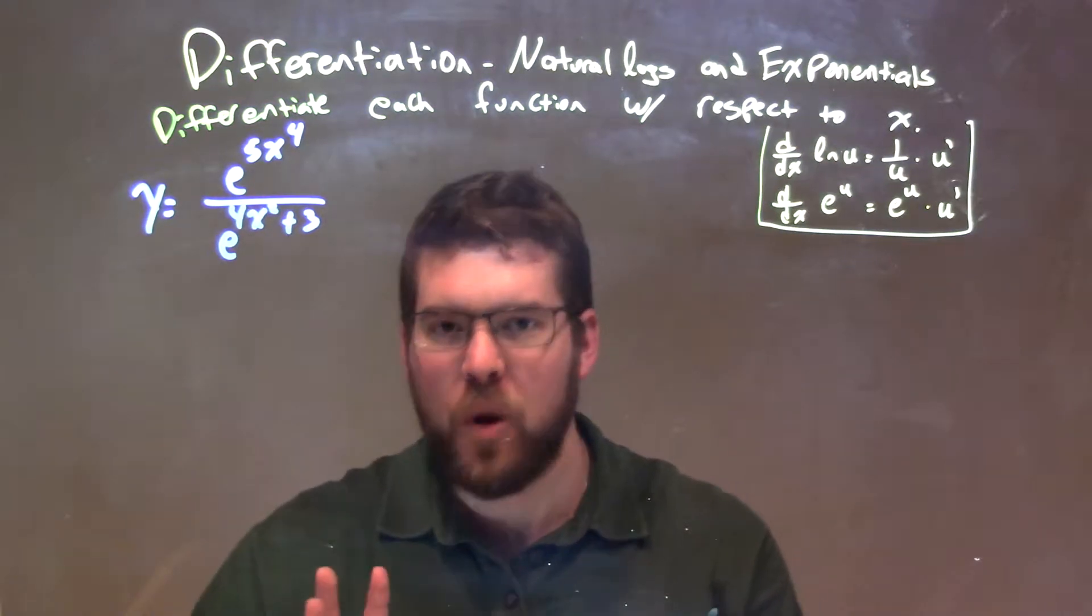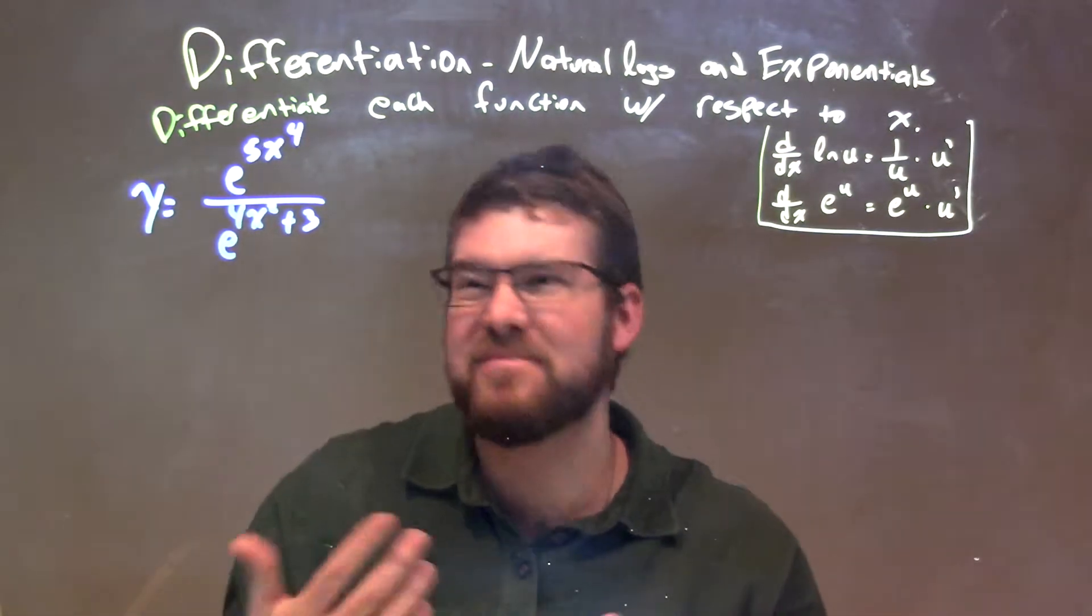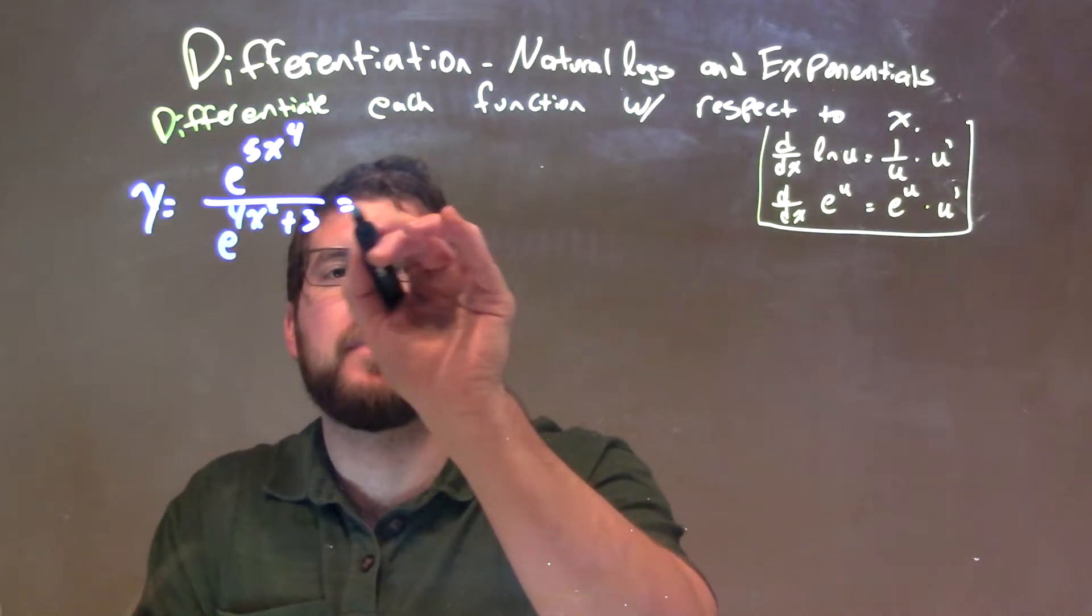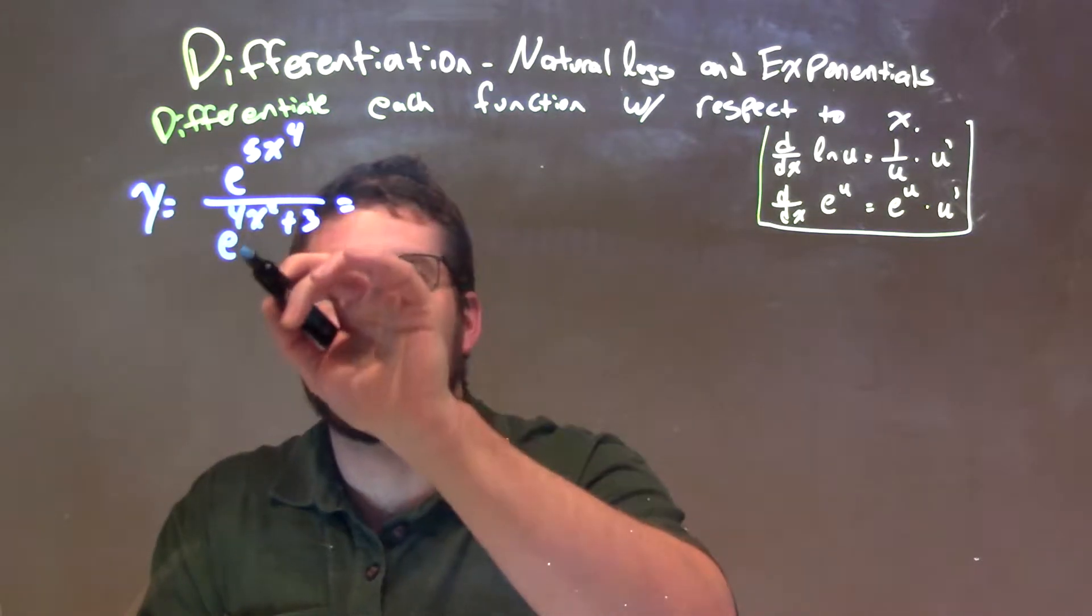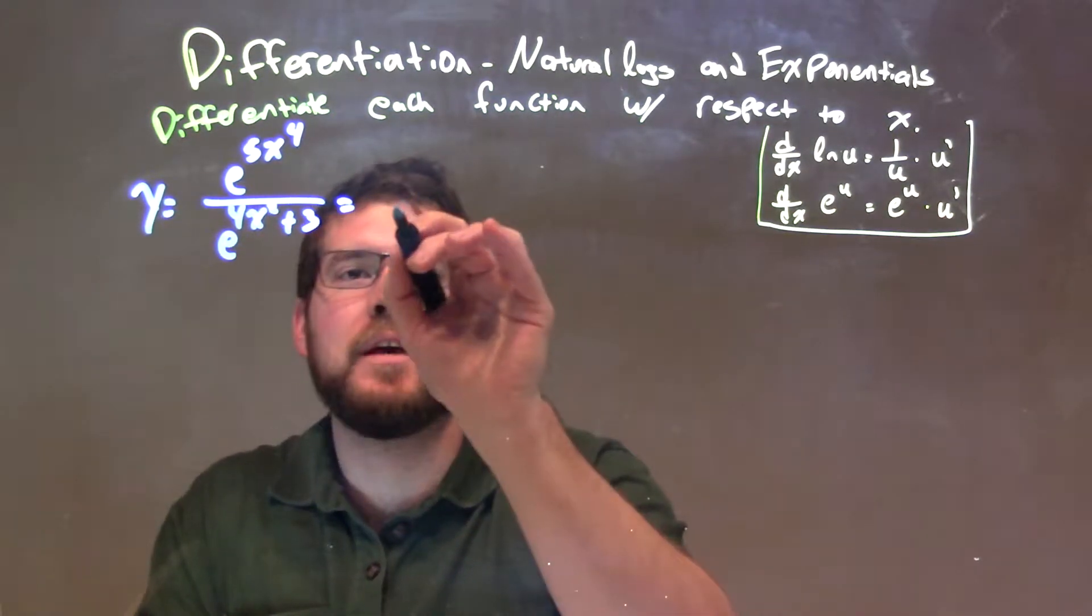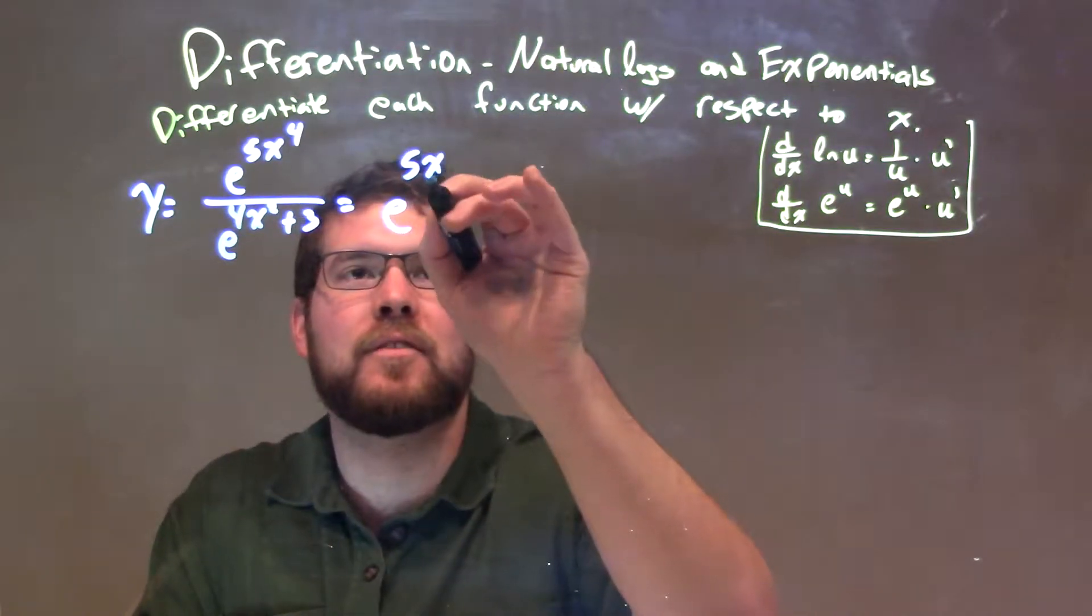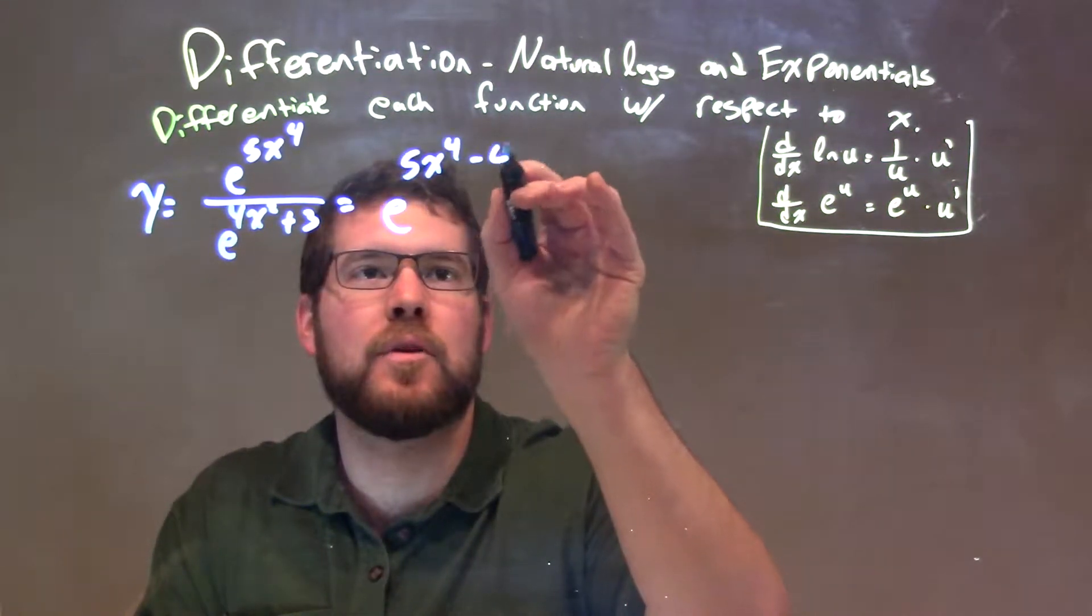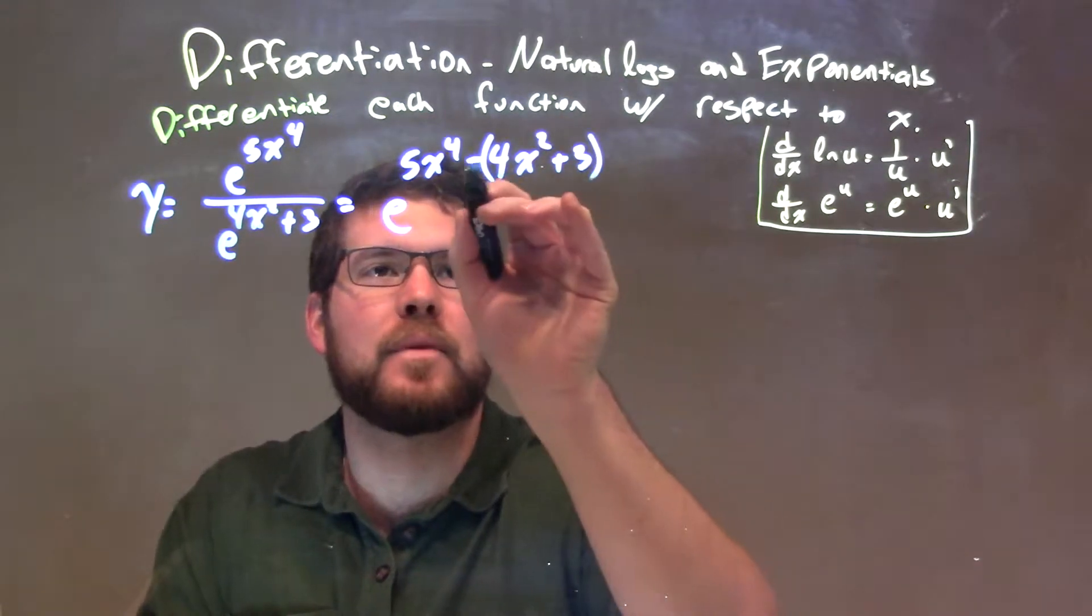Well, first thing, you don't want to just jump in right now and try to use maybe the quotient rule on this, but you could. Let's simplify this a little bit. Our rules of exponentials allow us to keep this as being the same base of e to the exponent, we just subtract the exponents: 5x to the 4th power minus 4x squared plus 3 power.